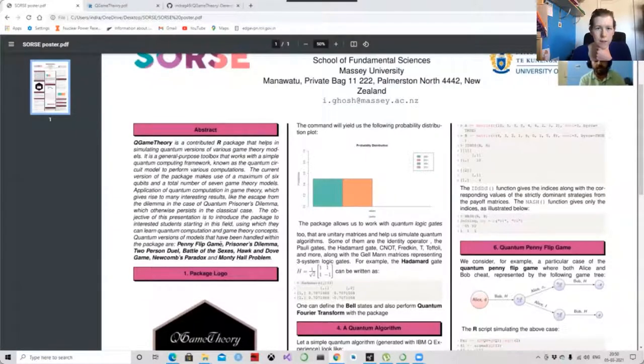They are a penny flip game, the prisoner's dilemma, the two-person duel, the battle of the sexes, hawk and dove game, Newcomb's paradox, and the Monty Hall problem.